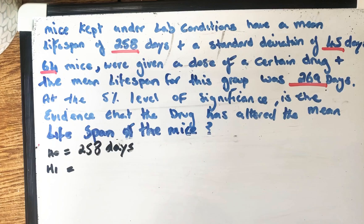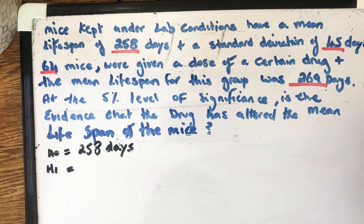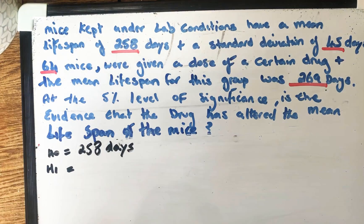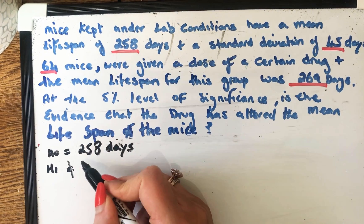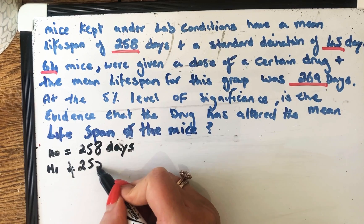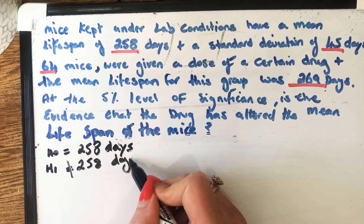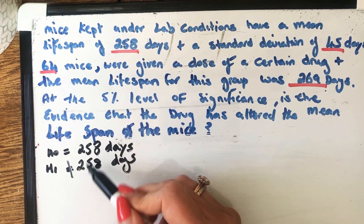So in this case, we always say not equal to 258 days. So the first tip I will give you is these numbers will always be the same, except the first one will be equal, the second one will be not equal.